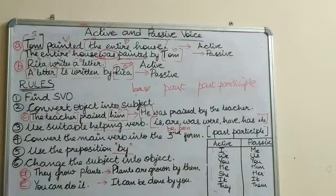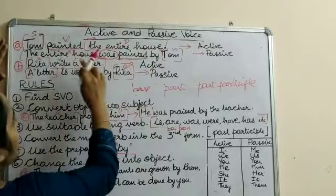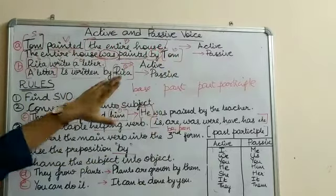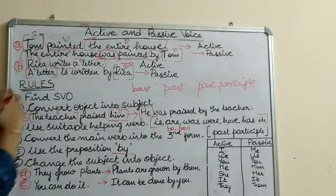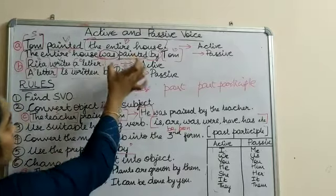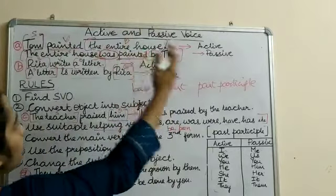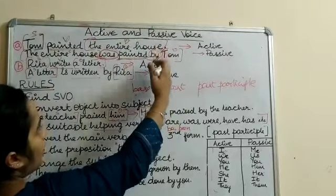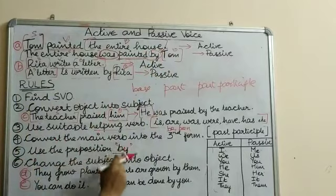The fifth rule is to use the preposition 'by.' Whenever we change a sentence from active to passive, always use the preposition 'by.' In the passive, the receiver of the action comes first, then the action, and the performer comes towards the end. We use 'by' to show that the action is performed by that person or thing.